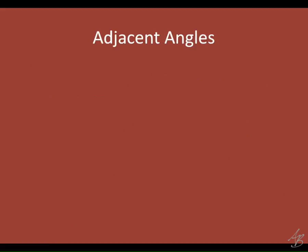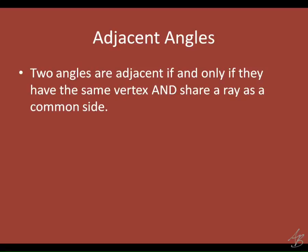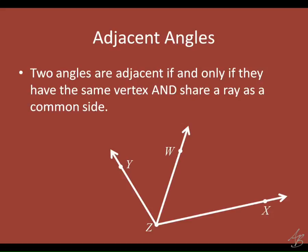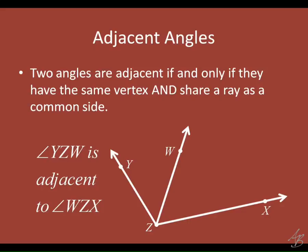Next: adjacent angles — another one we've seen. Two angles are adjacent if and only if they have the same vertex and share a ray as a common side. So they have to share a vertex and a side. We would say that angle YZW is adjacent to angle WZX in this picture.